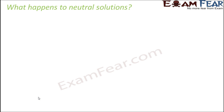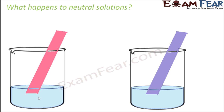Now you might ask what happens with neutral solutions. For a neutral solution, there would be no change in color — whether you put red litmus paper or blue litmus paper, both do not change their color. One very important thing: whenever you have to test whether a solution is neutral, you must perform the test with both red and blue litmus paper. If you only use red litmus paper and the color doesn't change, there are two possibilities — the solution may be acidic, or it may be neutral. To arrive at the right conclusion, test with both papers. If both do not change color, the solution is neutral.